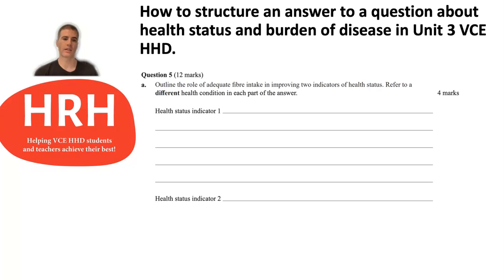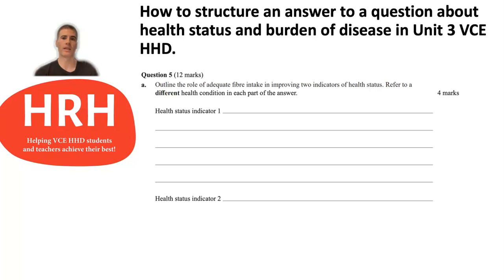Then you need to do that a second time. If you were to link into burden of disease, when mentioning burden of disease in an answer you should be referencing either YLL or YLD. For example, adequate fiber intake might contribute to feelings of fullness or satiety, preventing overeating of energy-dense foods. You could link that to a reduced risk of weight gain and developing obesity. If an individual spends fewer years living with a condition such as obesity, there are fewer years lived with disability, disease, or illness — and that reduces YLDs.